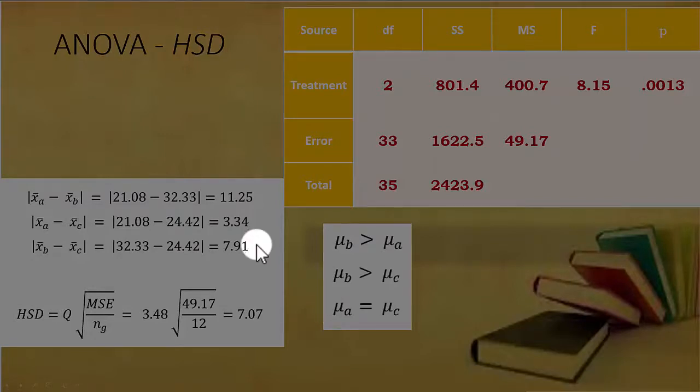Then going down to B and C, we see that 7.91 is larger than our cutoff of 7.07, so we'll conclude that mu B is greater than mu C.